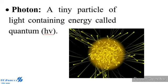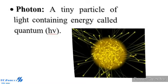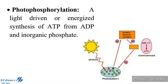Photon: A tiny particle of light containing energy called quantum (hv). Photophosphorylation: The process of ATP formation from ADP and inorganic phosphate in the presence of sunlight. In the chloroplast it is called photophosphorylation, as given by Arnon et al. in the year 1954.